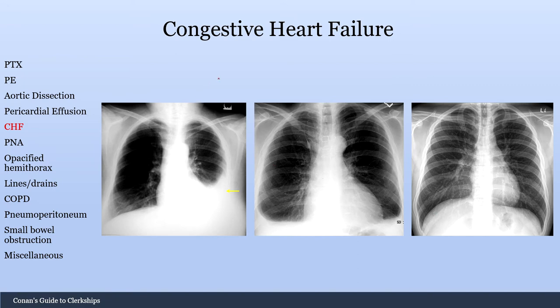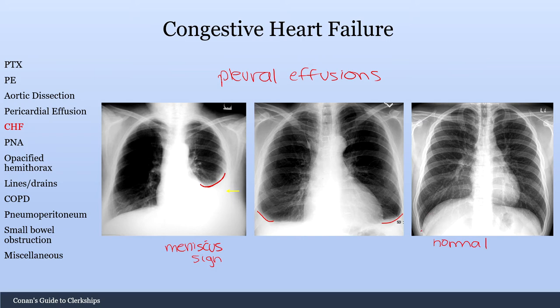Let's talk about pleural effusions. On the left there's clearly a large effusion — this is called the meniscus sign. In the middle image it may be harder to appreciate, but you have costophrenic angle blunting, showing small bilateral pleural effusions. A normal chest X-ray on the right shows sharp angles. This is one of the most common things you'll see on the wards — you should be comfortable identifying pleural effusions even when small.